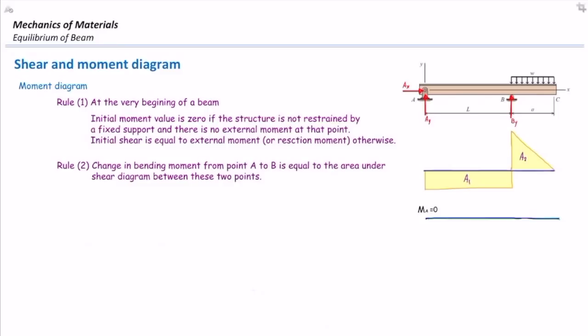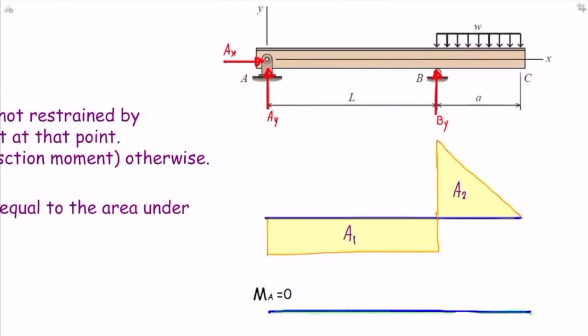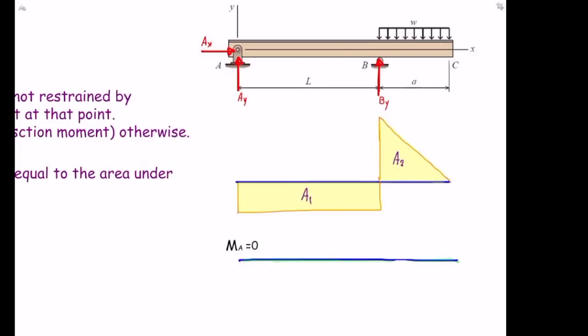Rule number two for moments: the change in bending moment from A to B equals the area under the shear diagram between those two points. To find the moment at point B, add area A1 under the shear diagram — if A1 is negative, the moment diagram goes downward. To find the moment at C, add the moment at B to area A2 under the shear diagram. Since A2 is positive here, the moment increases.